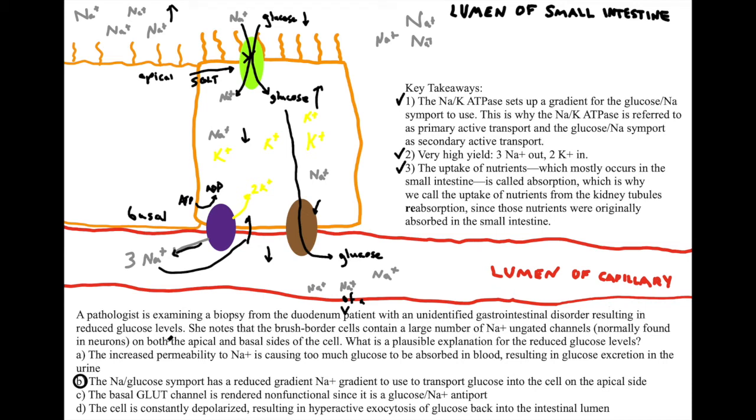That's exactly what B says. We have a reduced gradient to use to transport glucose into the cell on our apical side. I think it's also useful to go over why the other answers are wrong. Answer A: increased permeability to Na+ is causing too much glucose to be absorbed into blood. Right away, we know that's an opposite. If we had too much glucose in blood, even if it was being excreted in the urine, which does happen if glucose levels are extremely high—it's about 300 milligrams per deciliter—you will actually urinate glucose because your kidneys can't handle that much. But that would only happen if we had a really high blood sugar level. So this is actually an opposite and we can cross out A.